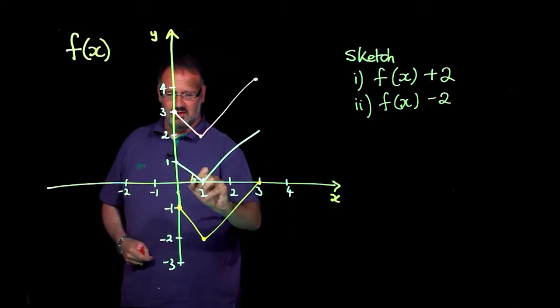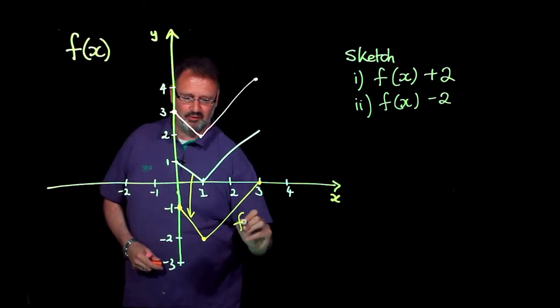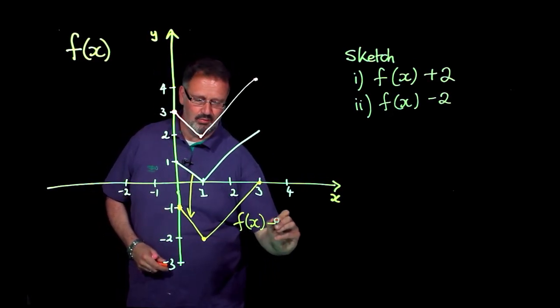So physically it shifted down the axis and this becomes f(x) minus 2.